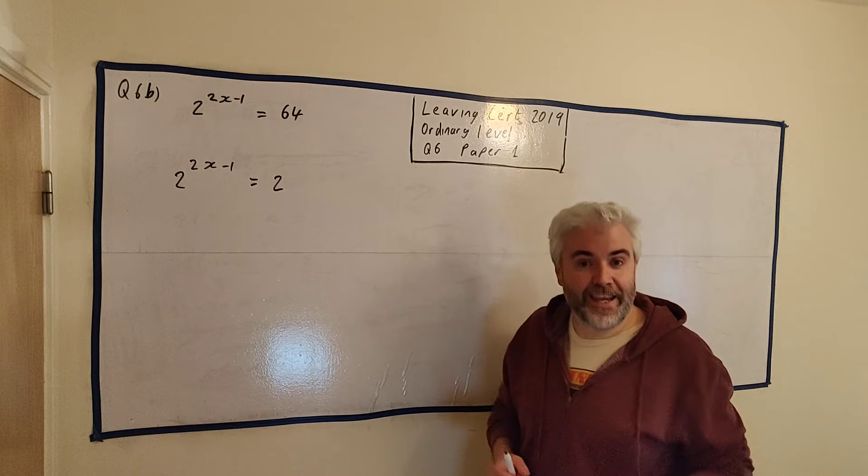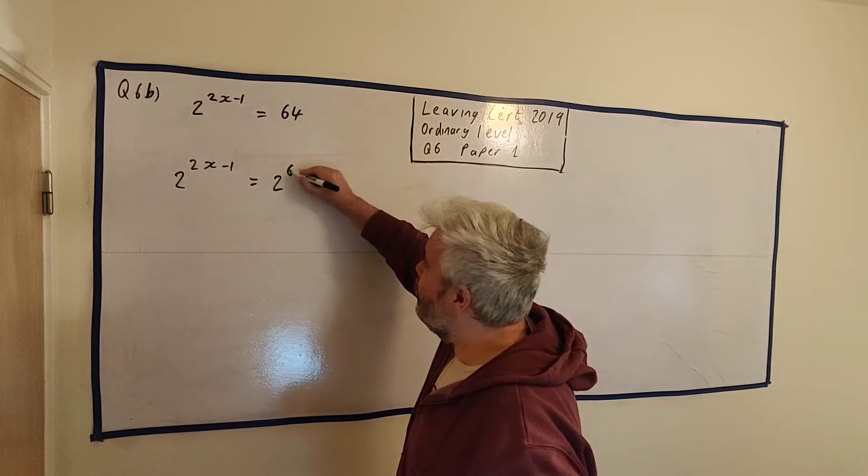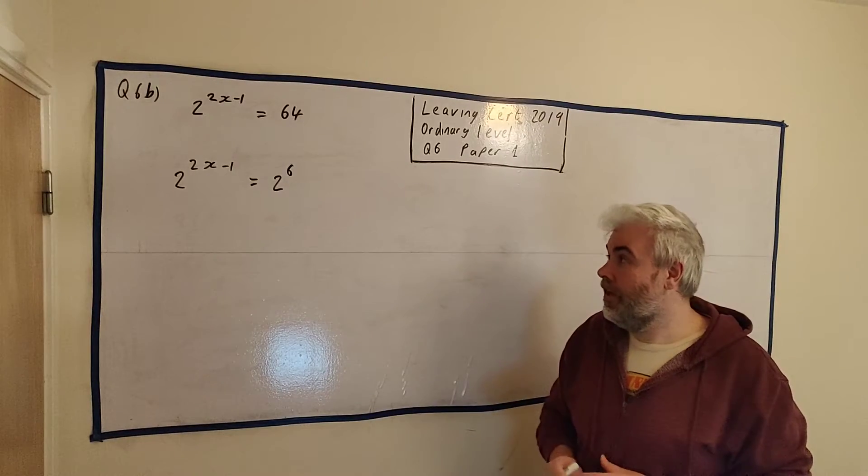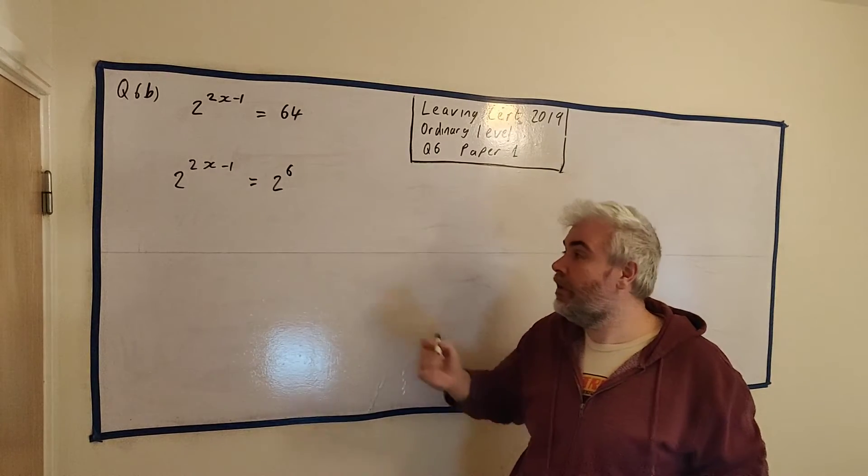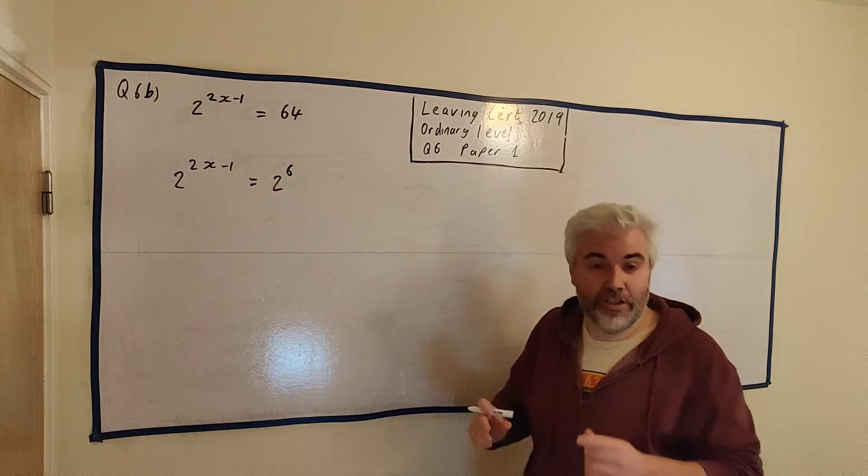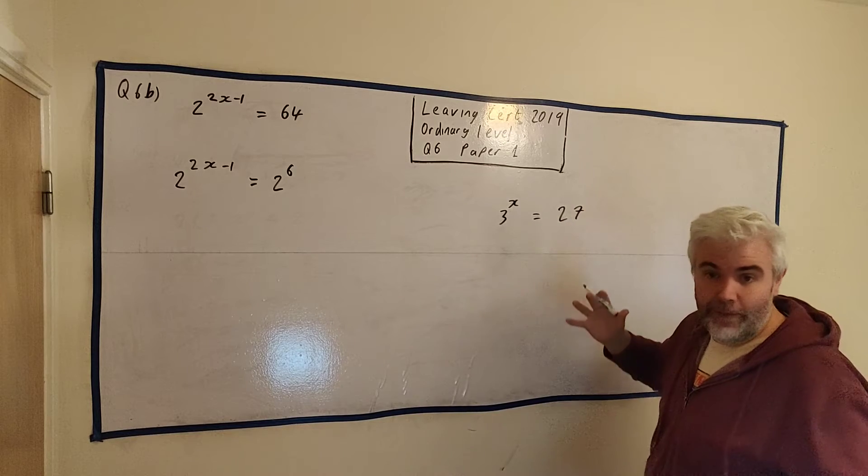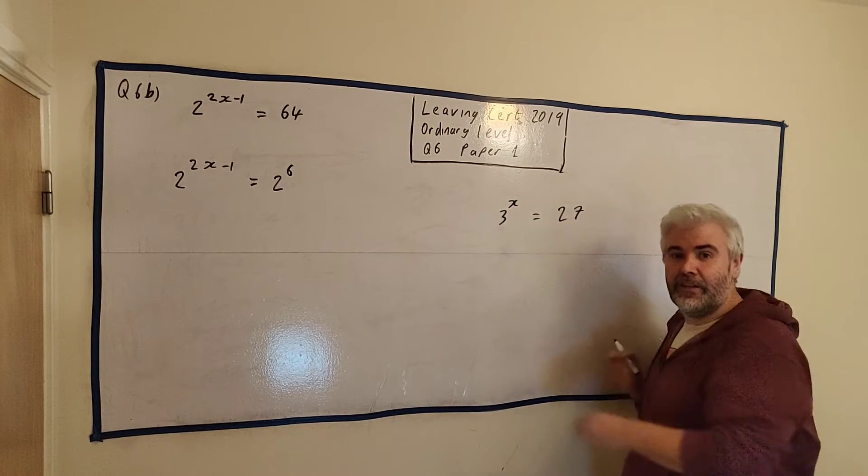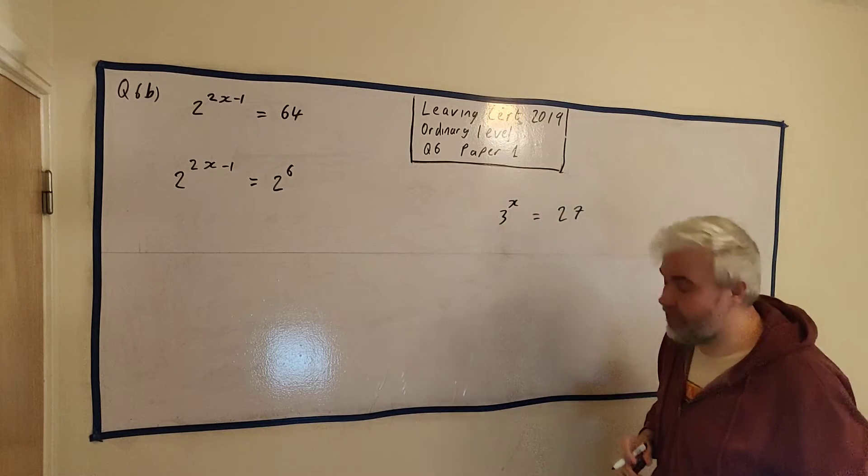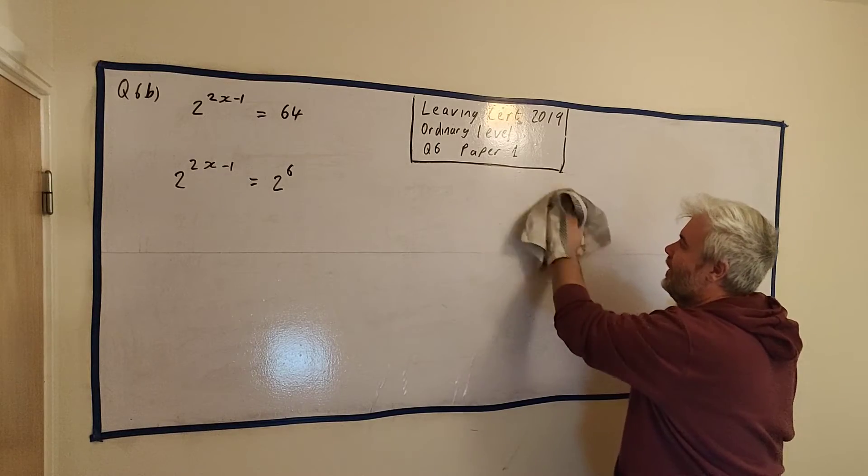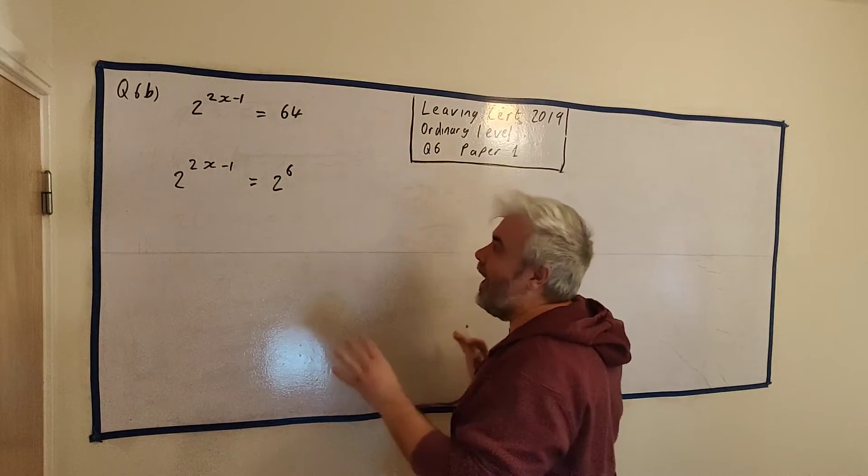You're meant to notice that. That is part of the question. You need to notice that 64 is 2 to the power of something. 2 to the power of 2 is 4, 2 to the power of 3 is 8. Test it out in a calculator. You will find that 2^6 = 64. So that is the first step. You are meant to notice that 64 could be rewritten as 2 to the power of something. In this case, we need to change this into this.